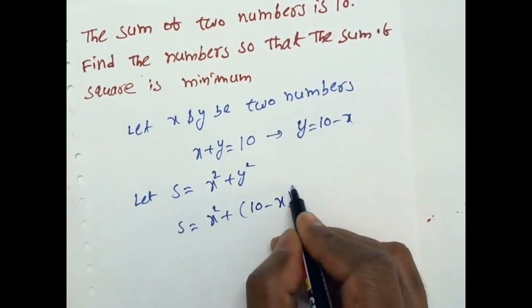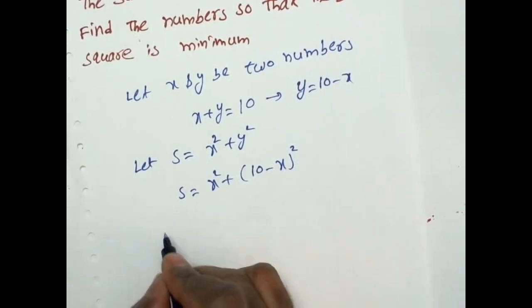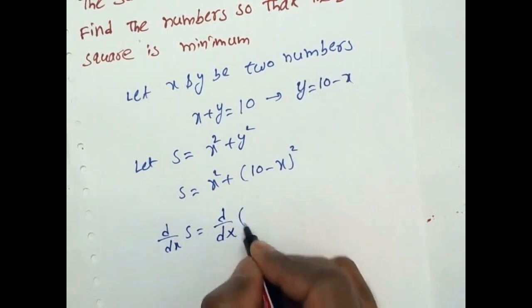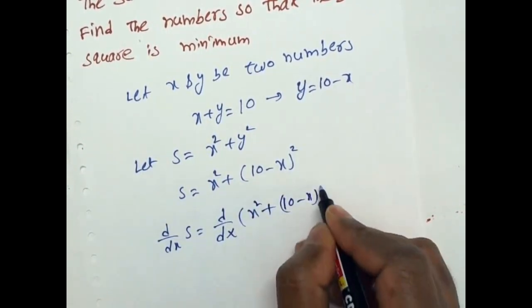S is equal to X square plus 10 minus X full square. Now put the derivative here with respect to X. That is d by dx of S is equal to d by dx of X square plus 10 minus X full square.